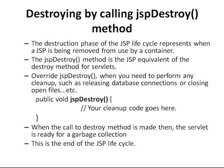Stage 7 is destroying by calling the JSP destroy method. The destruction phase represents when a JSP is being removed from use by a container. The JSP destroy method is the JSP equivalent of the destroy method for servlets. Override the JSP destroy method when you need to perform cleanup such as releasing database connections and closing open files. When the destroy method is called, the JSP is ready for garbage collection.